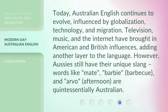Today, Australian English continues to evolve, influenced by globalisation, technology, and migration. Television, music, and the internet have brought in American and British influences, adding another layer to the language. However, Aussies still have their unique slang — words like mate, barbie (barbecue), and arvo (afternoon) are quintessentially Australian.